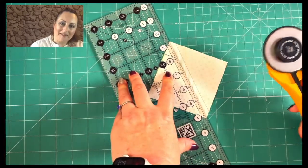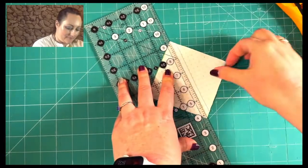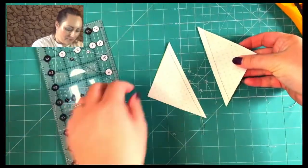And I'm going to cut along that line. I'm going to have two triangles.